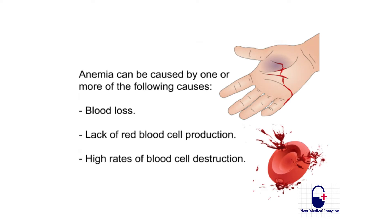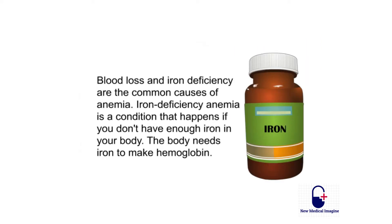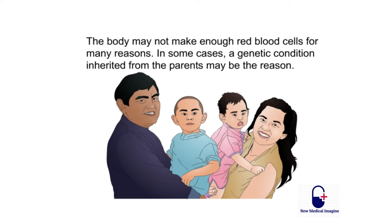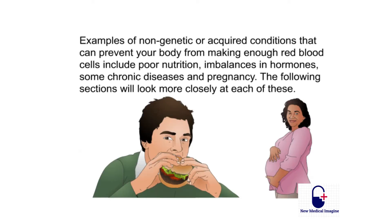Anemia can be caused by one or more of the following: blood loss, lack of red blood cell production, or high rates of blood cell destruction. Blood loss and iron deficiency are the most common causes. Iron deficiency anemia happens when you don't have enough iron — the body needs iron to make hemoglobin. Non-genetic conditions that can prevent enough red blood cell production include poor nutrition, hormonal imbalances, some chronic diseases, and pregnancy.